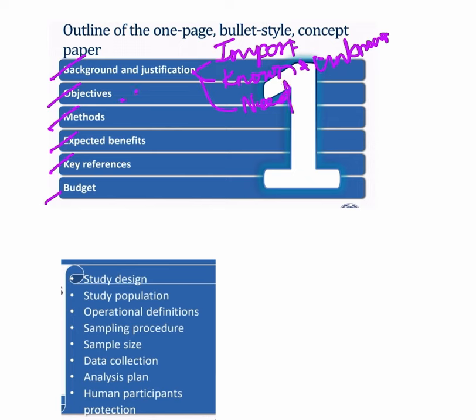Under objectives, we can have two to three objectives. They can be general or specific, but you should clearly mention your primary objective and secondary objectives.